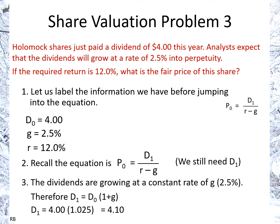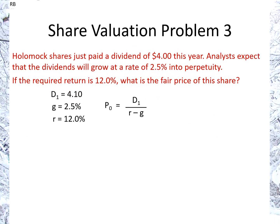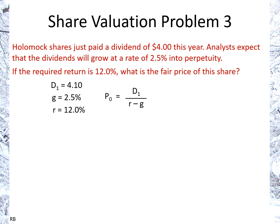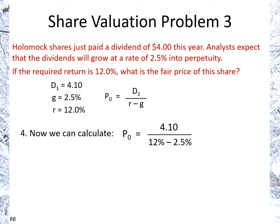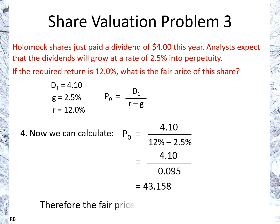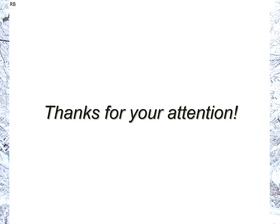Now we have all the information we need. With D1 as $4.10, G as 2.5%, and R as 12%, we calculate the price as 4.1 divided by (12% minus 2.5%), which is 4.1 over 0.095, or 9.5%. So our answer is $43.16 — that is the fair price of this share. That's all, thanks for your attention, hope it helped.